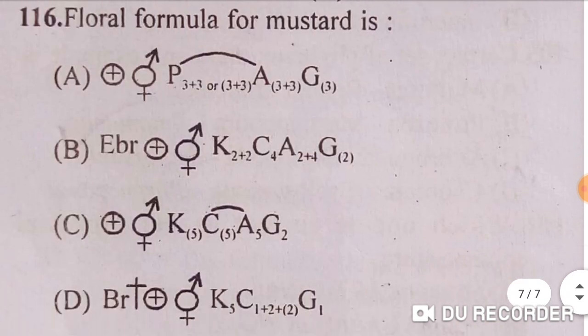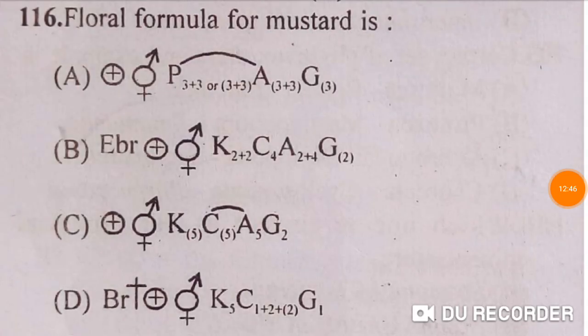The floral formula for mustard: mustard belongs to family Brassicaceae. Flowers are actinomorphic (radial symmetry), bisexual, with 4 sepals arranged in two whorls (2+2), 4 petals in a single whorl, 6 stamens that are tetradynamous (2 lateral shorter and 4 median longer), and 2 carpels — bicarpellary syncarpous, superior ovary. The correct floral formula corresponds to option B.